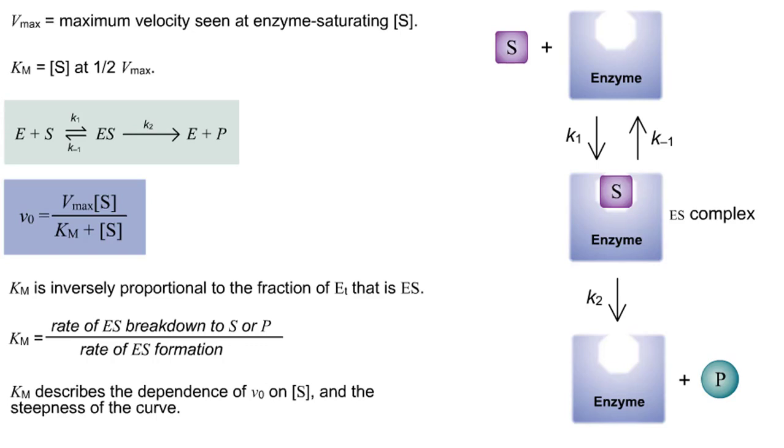The most useful definition for Km is that it is a constant that describes the dependence of V0 on S, and dictates the steepness of the shape of the Michaelis-Menten curve.